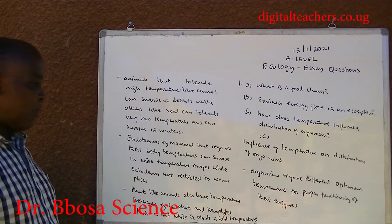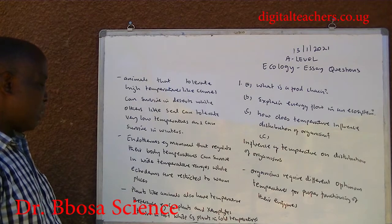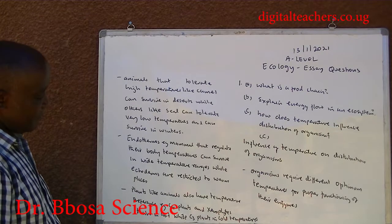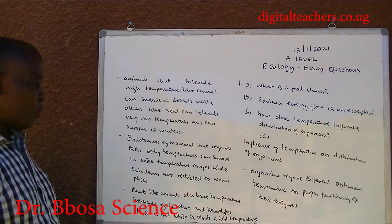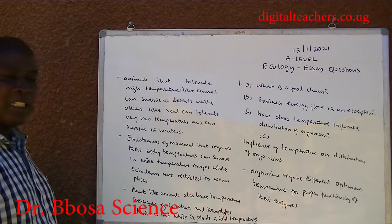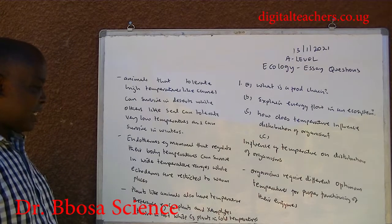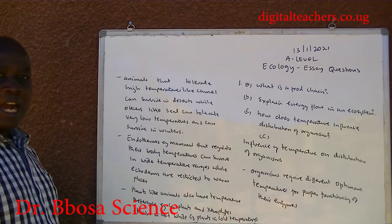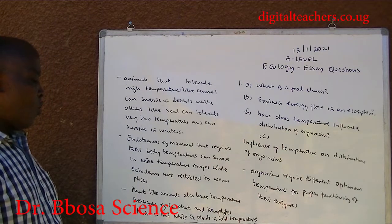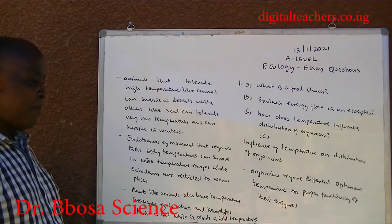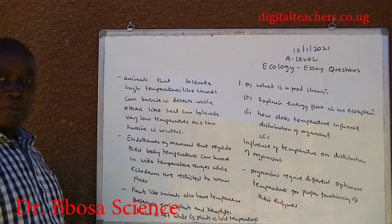While ectotherms are restricted to warm places. Plants, like animals, also have temperature preferences. For example, xerophytes thrive in hot conditions, while other plants prefer cooler temperatures.